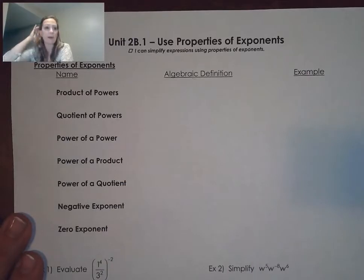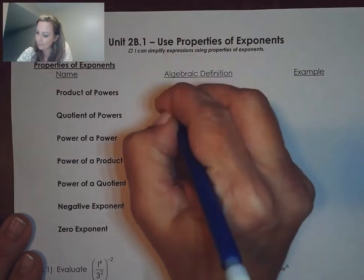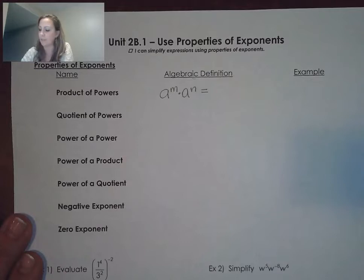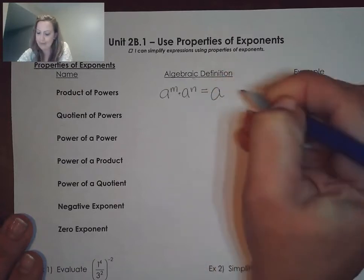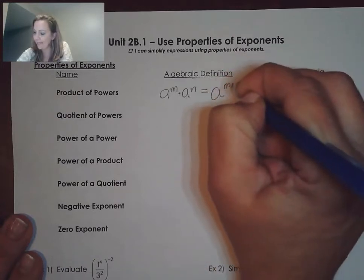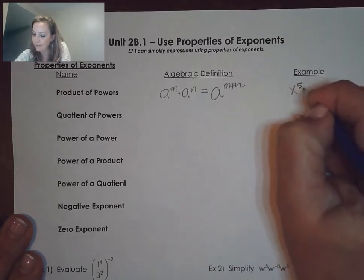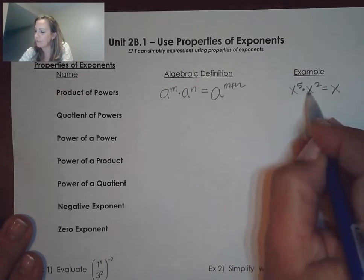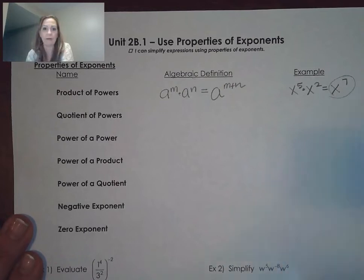Let's start with the product of powers. These should be reviewed from Algebra 1. The product of powers states that if you have A to the m times A to the nth power, notice that you're multiplying two powers that have the same base. What we do is we keep the base and then we add the exponents. A specific example would be x to the fifth times x squared — both have the same base, so we keep x and add 5 and 2 to make 7.